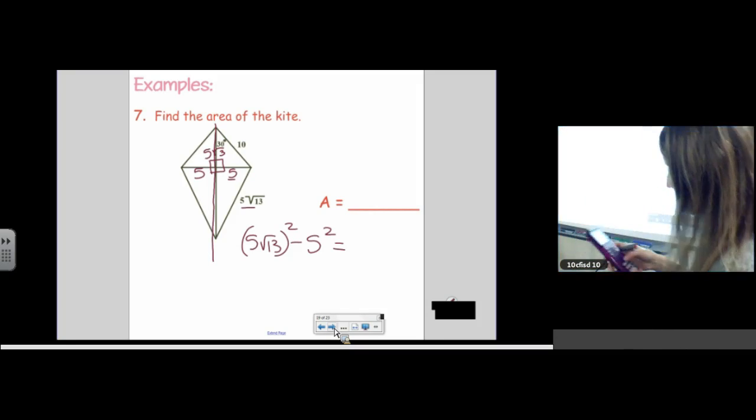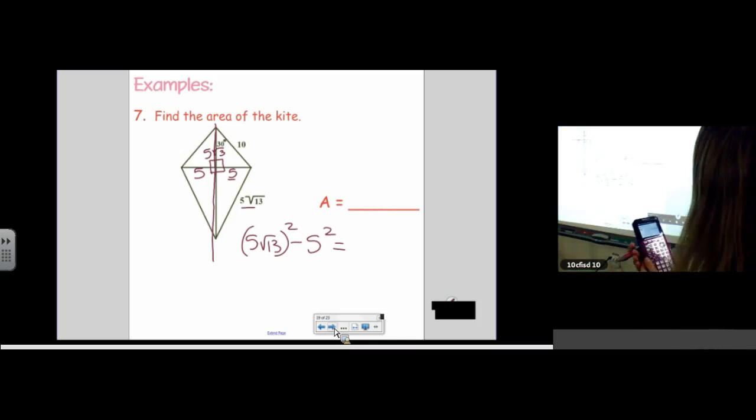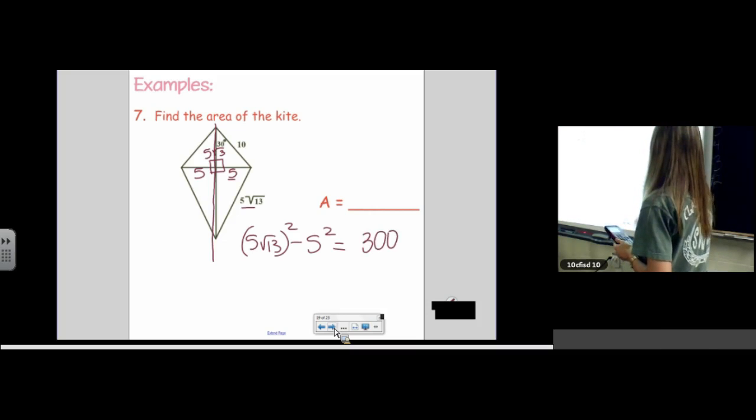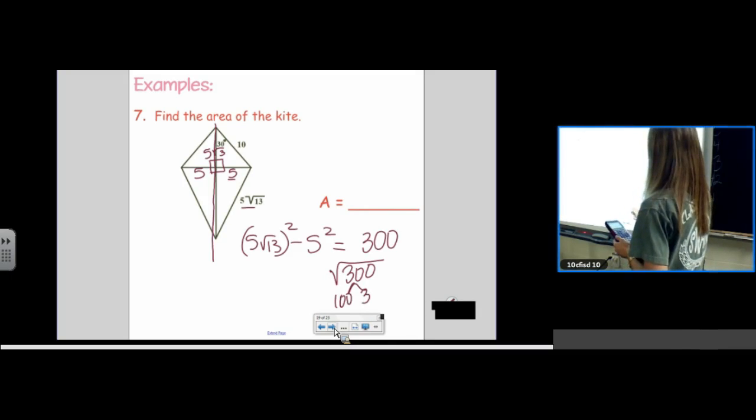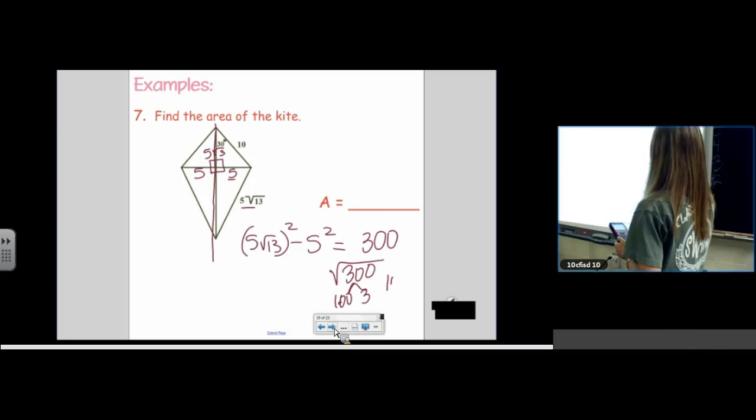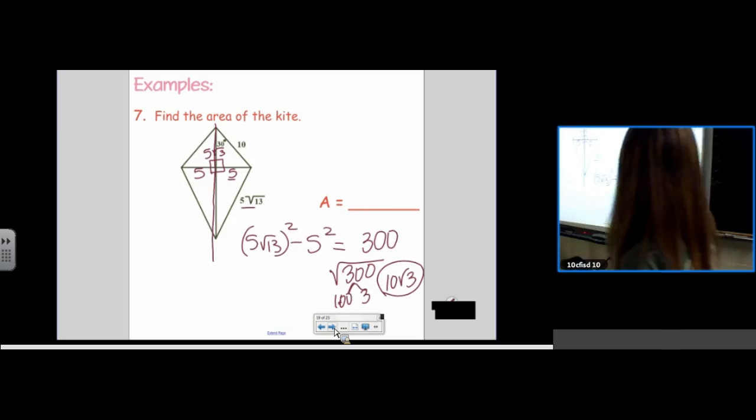So, I'm doing 5 root 13 squared, and I'm just putting it into my calculator. Minus 5 squared. Oh, my goodness. We get 300. And then we know that we need to square root it. 100 times 3. Oh, perfect square. Perfect square. So, you can fully factor treat it if you want, but it's going to be 10 root 3.